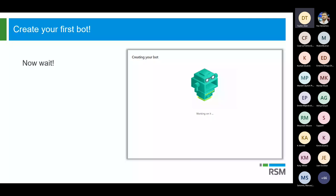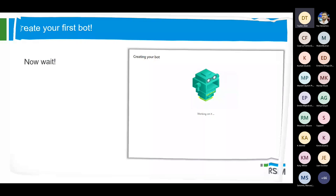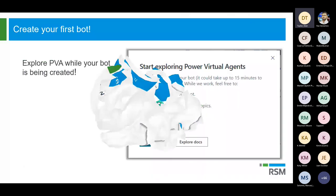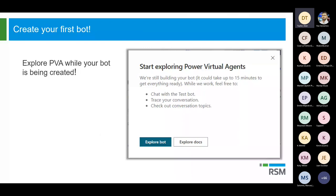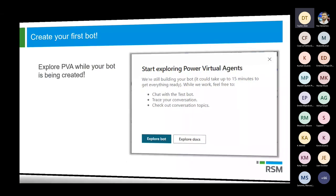Once you do that, you're going to see this little robot doing some dancing on your screen. After a couple of minutes, you'll see a notification that says you can start exploring Power Virtual Agents while it's still building your bot in the background. This is a one-time thing — once you spin up this environment, you have the ability to build multiple bots. So it's not like you need to spin up another environment for multiple bots; you can do that all within this particular environment.